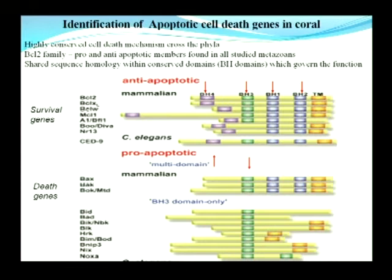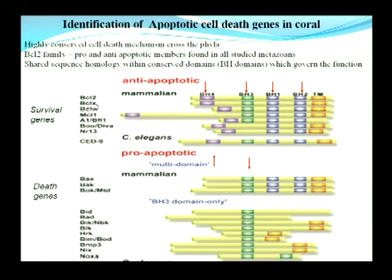My recent research has been identifying the genes involved in apoptotic cell death. Apoptosis is a highly conserved cell death mechanism found across the phyla. Some of the genes involved in this controlled cell suicide are the BCL2 family — pro- and anti-apoptotic members found in all studied metazoans. These are identified through shared sequence homology of a particular domain which governs their function as either pro- or anti-apoptotic.